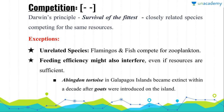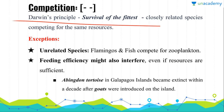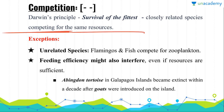Now we have competition. In competition, both interacting species are badly affected — they both lose something. You must have heard about Darwin's principle of survival of the fittest. Whenever closely related species compete for the same resources, the weaker one will definitely go extinct.